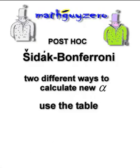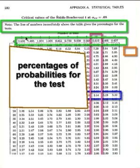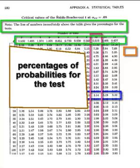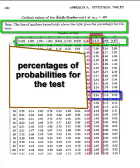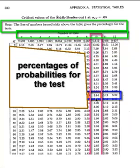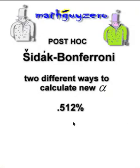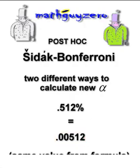Or we can use the table — it's kind of clever the way it's set up. The line of numbers on top in green are the percentages of the tests; in other words, they're the calculated probabilities. What you do is you simply go from where your column was all the way up to the top and read that number right there. It's .512, and that's a percent, so we need to change that into a regular number. And that looks like the same thing we got from the formula.